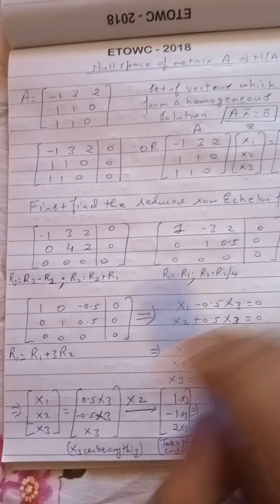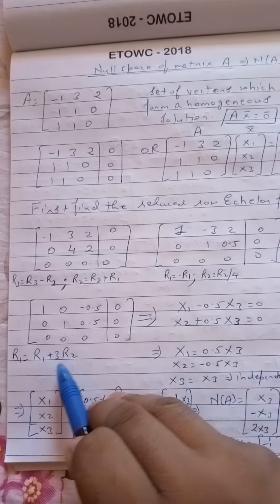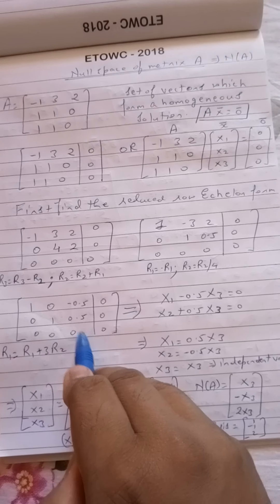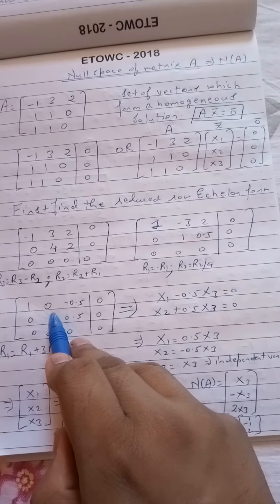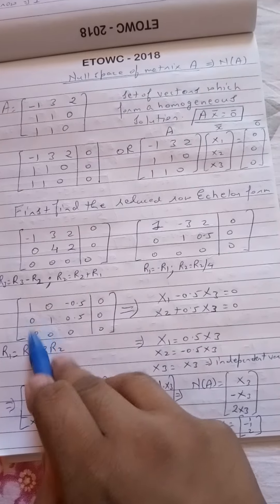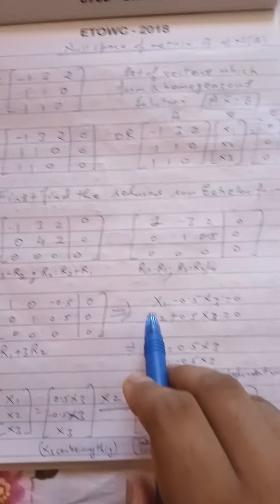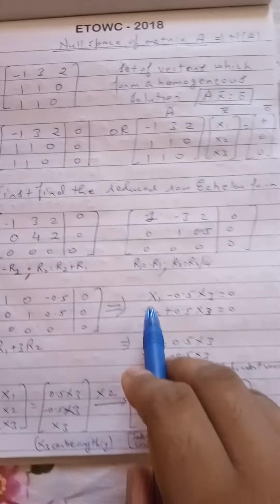And then in the next step we perform R1 equal to minus R1, R2 equal to R2 by 4, and then R1 equal to R1 plus 3R2. And once you do that you will get the matrix into a reduced echelon form. Now this reduced echelon form in the main diagonal you have these values and below the main diagonal the contents are 0.